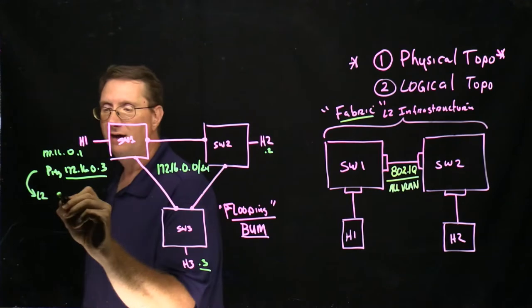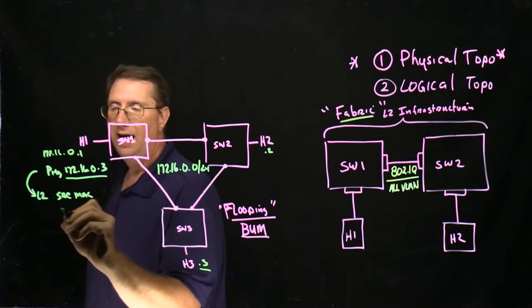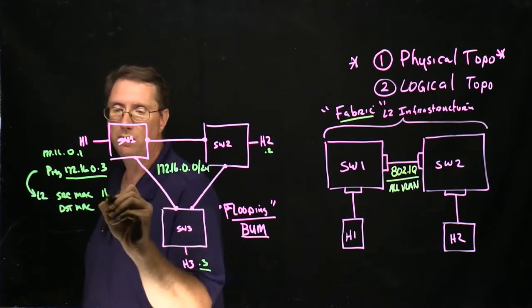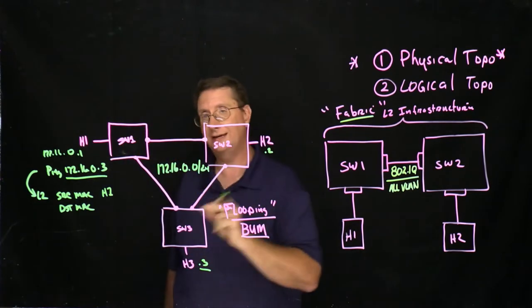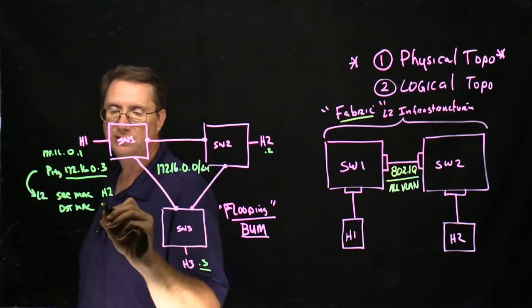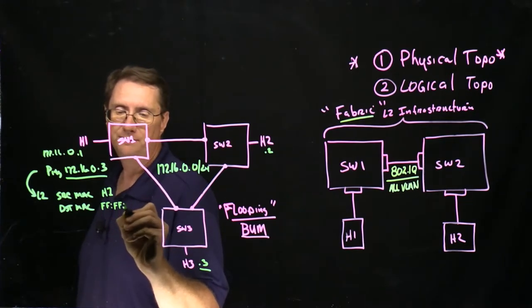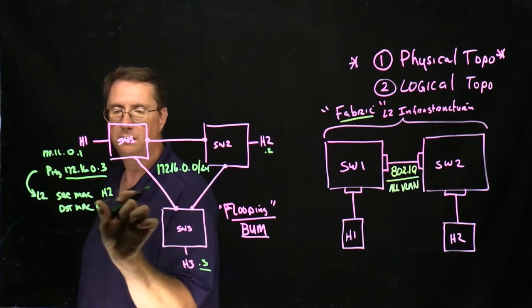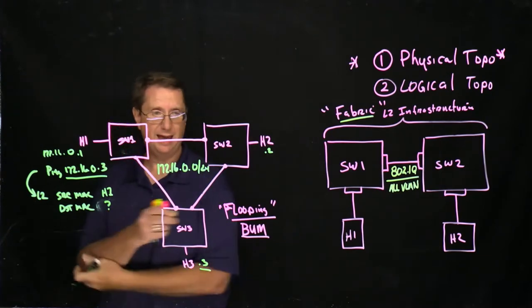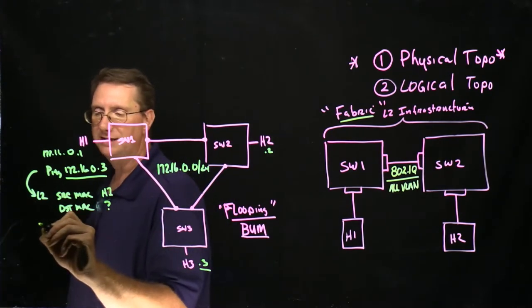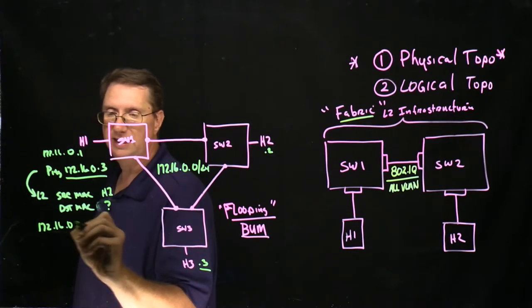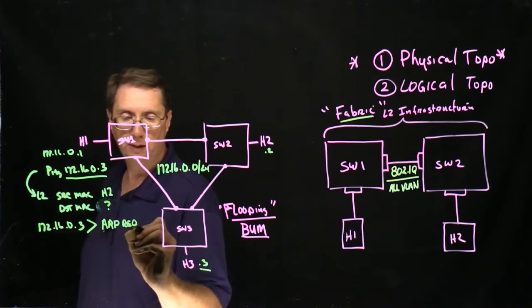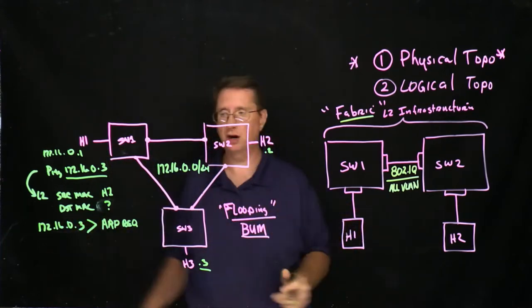we've already covered the fact that I need to have the source MAC, and I need to have the destination MAC. Well it stands to reason that I'm going to have the source MAC, that's going to be whatever the MAC address is assigned to the network card installed in H1, host one, but the problem here is that we don't know the destination MAC address. So what we're going to do is we're going to take the destination IP 172.16.0.3 and we're going to send out an ARP request. And hopefully it'll flood throughout my entire infrastructure and get there. Therein lies the problem.